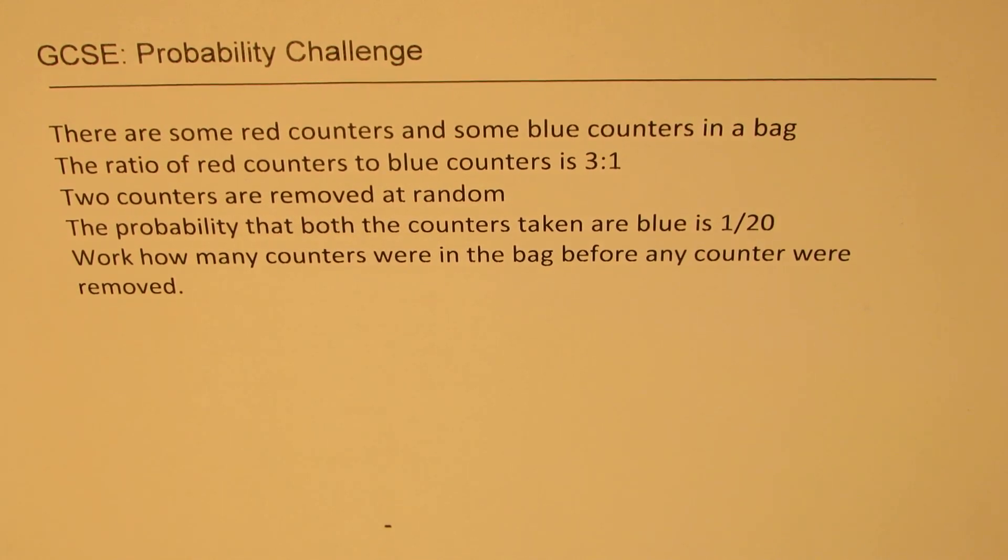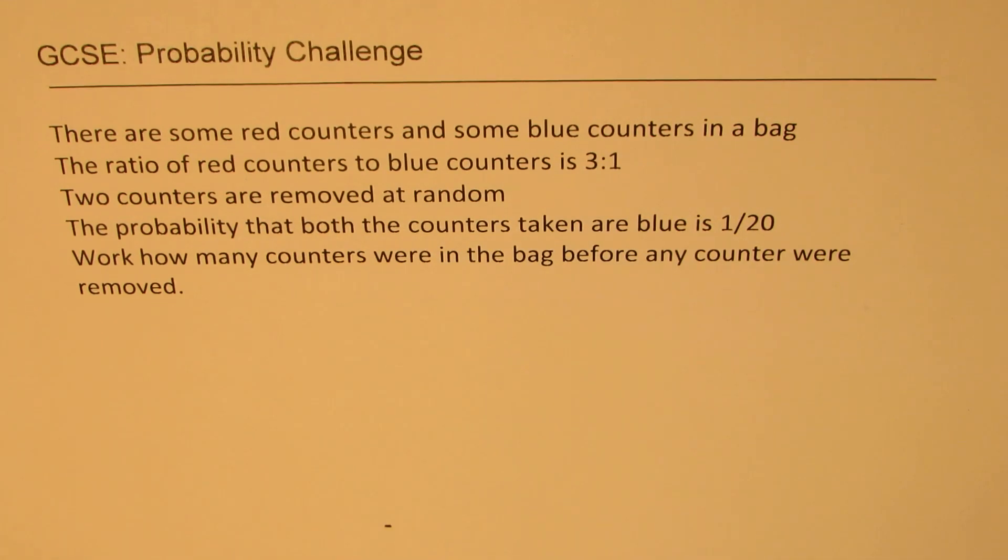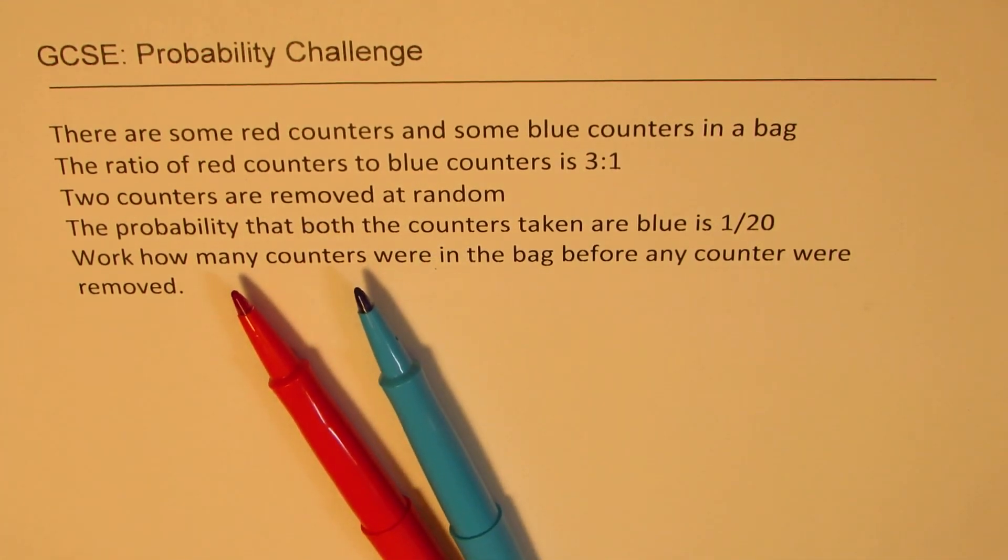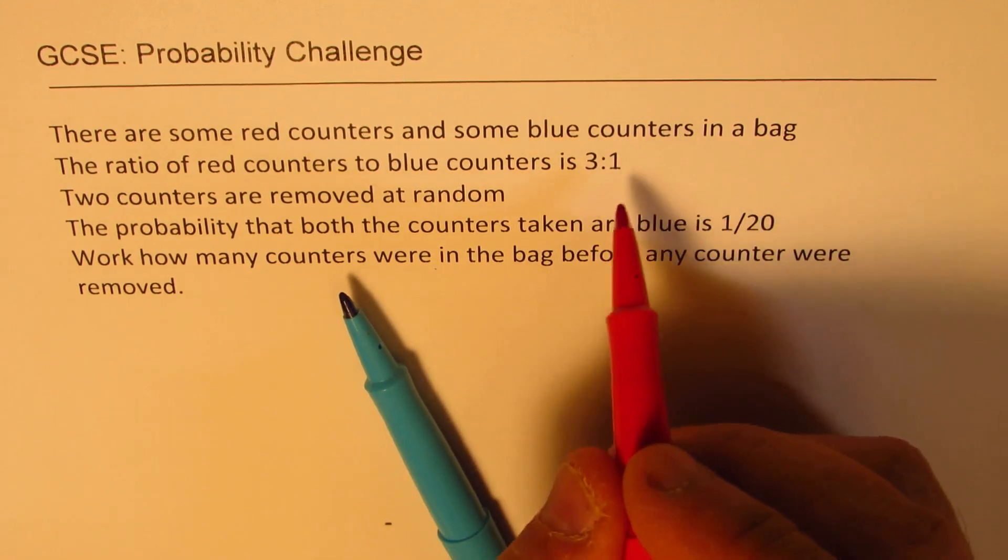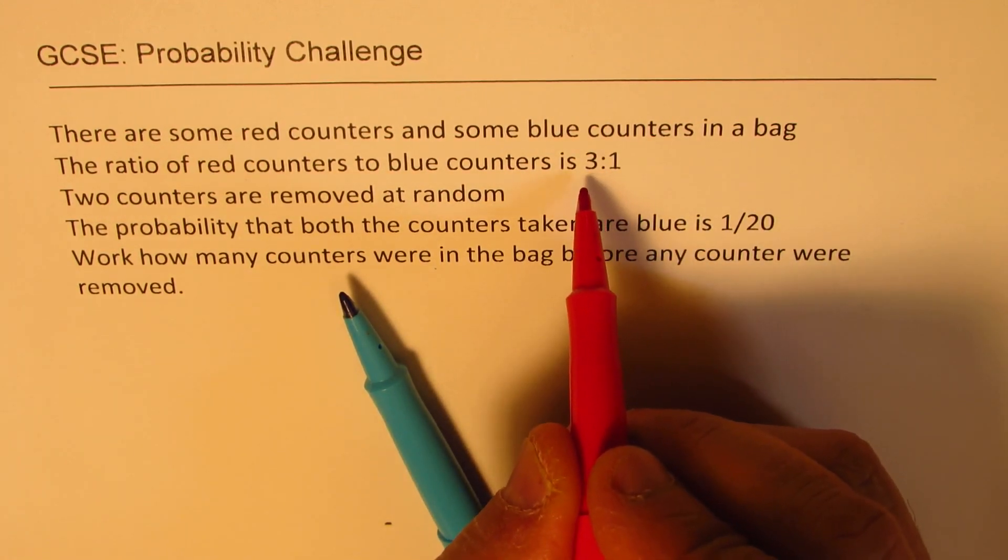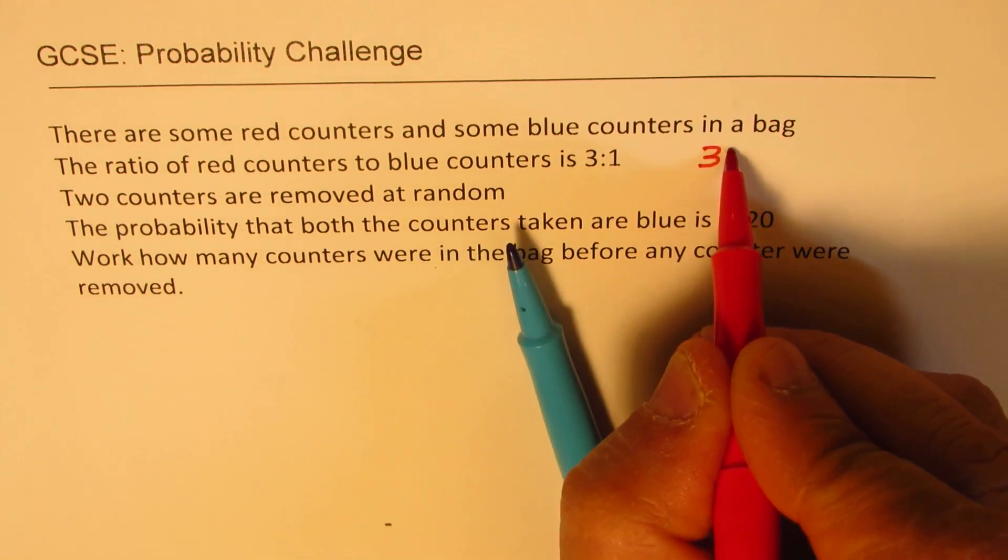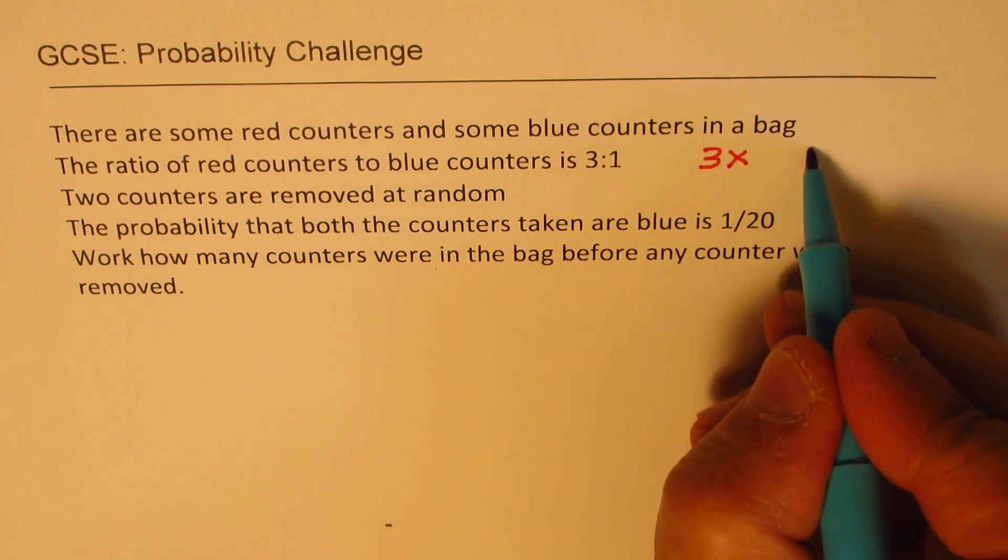Now let's begin by understanding what is given. There are some red counters and some blue counters in a bag. The ratio of red counters to blue counters is 3 to 1. So whenever we say ratio, that means we can involve a variable here and we are saying red counters to blue counters. So we can say 3 times x, and the blue will be x.